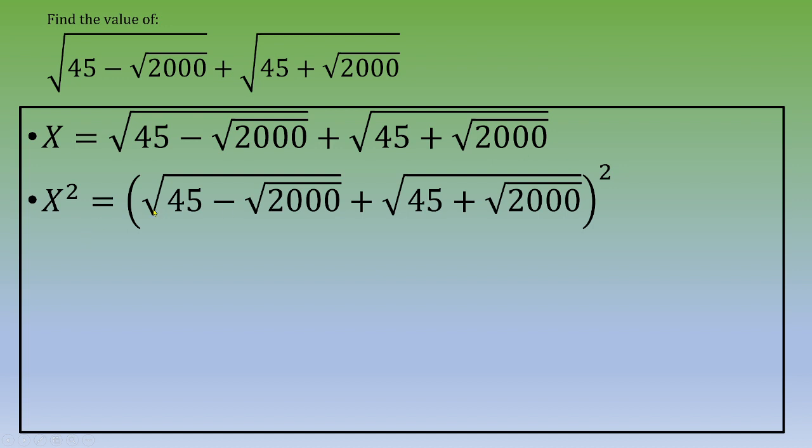If I want to expand what is between parentheses, I need to recall this remarkable identity: (a + b)² equals a² plus 2ab plus b². Let's do that.